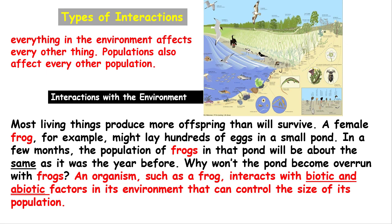Everything in the environment affects every other thing — populations also affect every other population. Living things affect each other because they share food, water, oxygen, and space. Most living things produce more offspring than will survive. A female frog, for example, may lay hundreds of eggs in a small pond. In a few months, the population of frogs in that pond will be about the same as it was the year before.